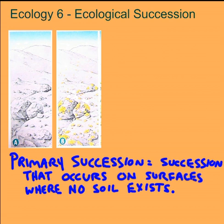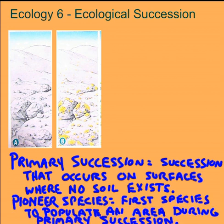These first species to arrive are called the pioneer species. Now these mosses and lichens, living right on the rock, produce enzymes that along with weathering start to break down the rock into little pieces, which collect in cracks and start forming soil. The mosses and lichens also die eventually and become part of the soil as well, so the communities are actually changing the ecosystem as they live.